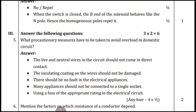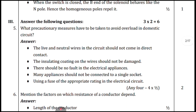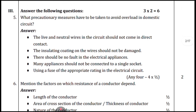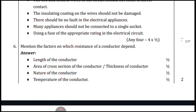Coming to the fifth question: write any four measures to be taken to avoid overload in a domestic circuit. You have to write any four points, with each point carrying half a mark.